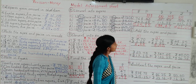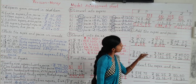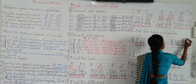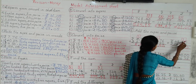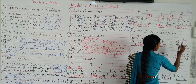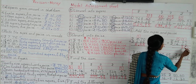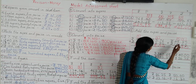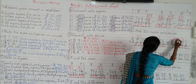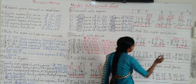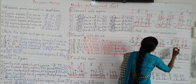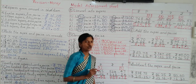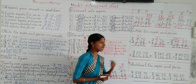Now look at the next example: rupees 48, 85 paisa plus rupees 14, 25 paisa. First add the paisa: 5 plus 5 is 10 — carry 1, write 0 in the ones column; 8 plus 2 is 10, 10 plus carry 1 is 11 — again carry 1, write 1 in the tens column. Then insert the dot. Now add the rupees: 8 plus 4 is 12, 12 plus carry 1 is 13 — carry 1, write 3 in the hundreds column; 4 plus 1 is 5, 5 plus carry 1 is 6. So what is the total? 63 rupees 10 paisa.